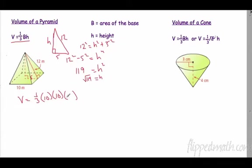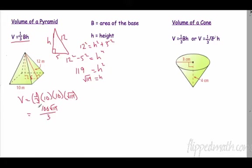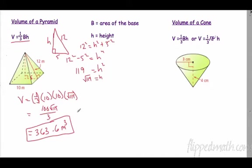That's obviously not going to be a perfect square — we'll round at the end. If you're smart, just put this whole thing in your calculator right away. 10 times 10 is 100, so this is 100 times the square root of 119 divided by 3. Rounded to the nearest tenth, you get 363.6 cubic meters.